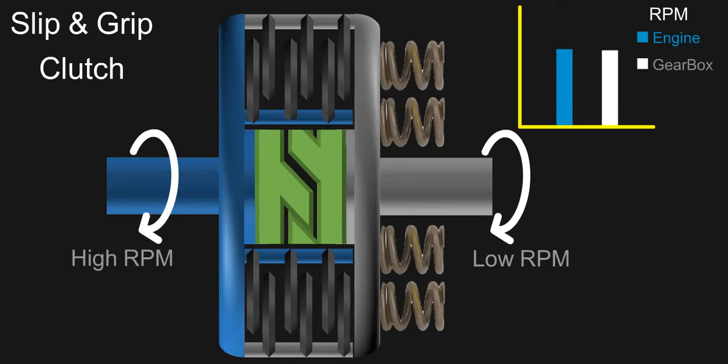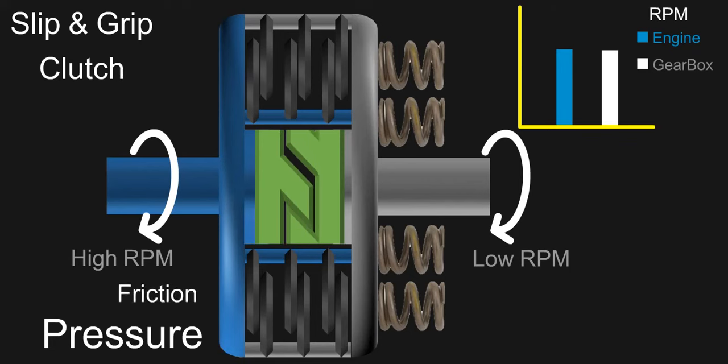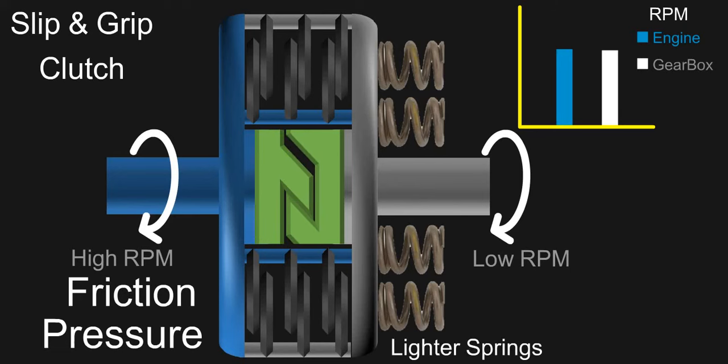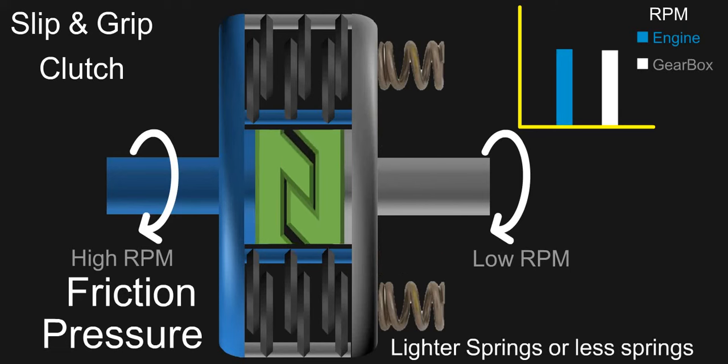Hence, the space here decreases. This puts pressure on the clutch plates. This increased pressure holds the plates tighter, hence increasing the friction. As this mechanism does the work of pressurizing the plates together, lighter springs or less number of springs are required here to pressurize these clutch plates, as now both of them share the work.